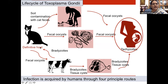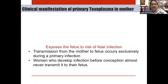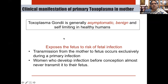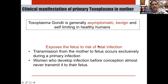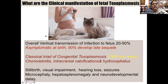For toxoplasmosis, the cat is the definitive host, and maternal infection occurs through cat feces, improperly cleaned vegetables, or undercooked meat. The mother is usually completely asymptomatic — the infection is benign and self-limiting. Importantly, fetal infection only occurs with primary infection; there is no recurrent infection in toxoplasmosis, and infection prior to conception does not transmit to the fetus.